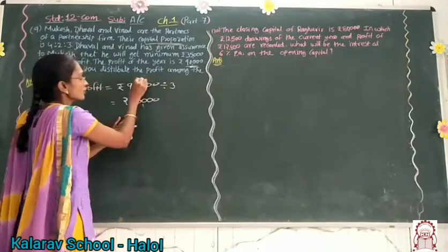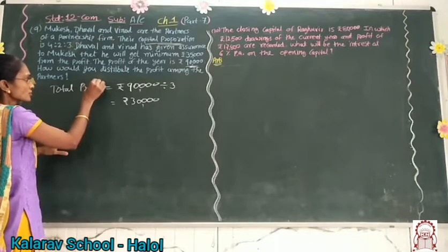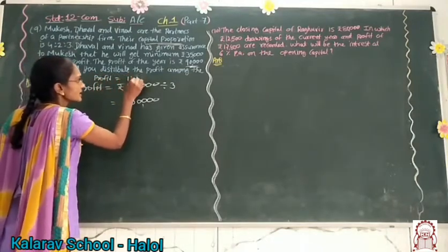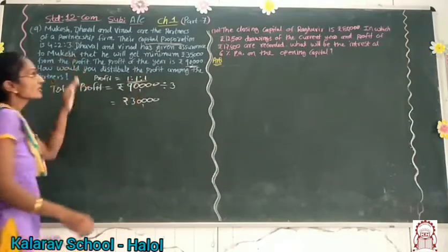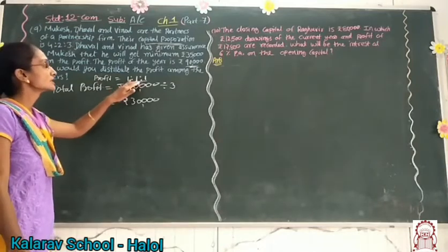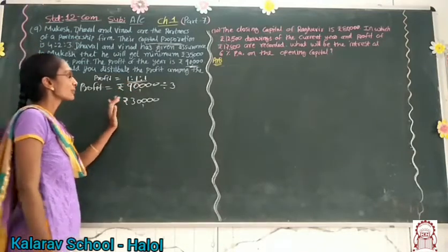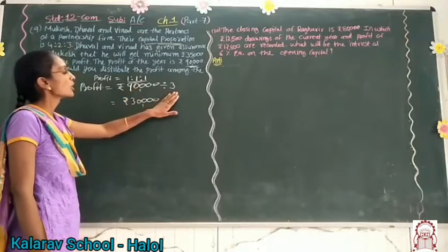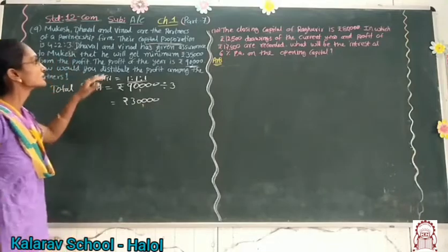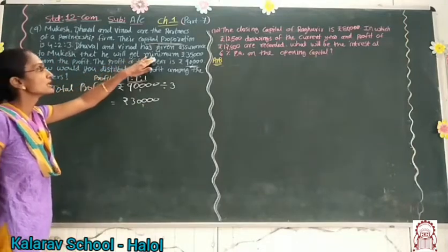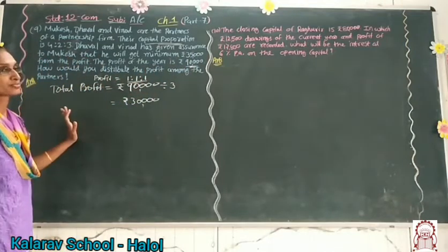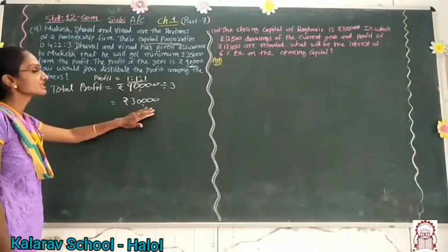The profit proportion is 1:1:1, because whenever the profit proportion is not mentioned, we take it as equal proportion, that is 1:1:1. So it is divided among 3 partners and each partner gets Rs. 30,000. Now the condition is that Mukesh has to get a minimum of Rs. 35,000, but Mukesh is getting only Rs. 30,000.